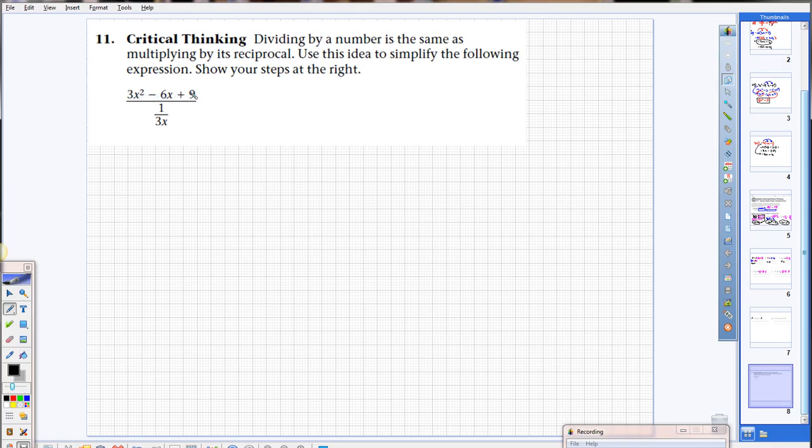So you're going to take 3x squared minus 6x plus 9 over 1 and multiply it by 3x. So really, you're just going to be distributing that 3x through. I hope that this has been somewhat helpful. If you do have any questions, write them down for tomorrow's class or email them to me.